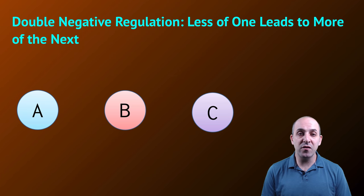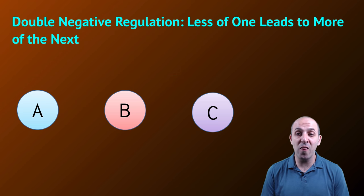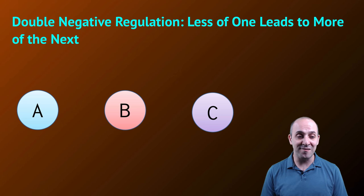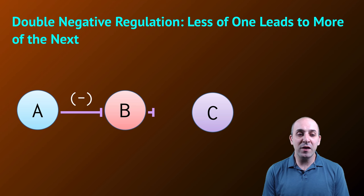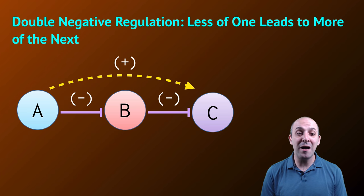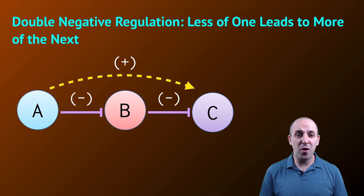Getting a little more complicated, we can think about double negative regulation, where less of one thing leads to more of the next. To understand this, we need to add another component to our system: A, B, and C. In a double negative regulatory system, A negatively regulates B and B negatively regulates C. As a result, A has a positive effect on C. That's probably a little hard to grasp without a specific example.